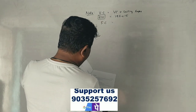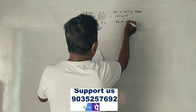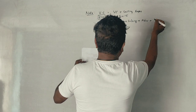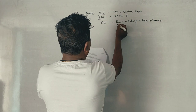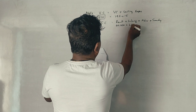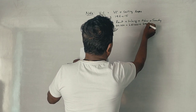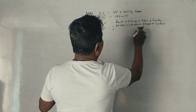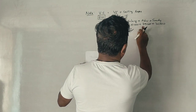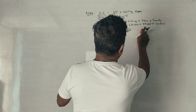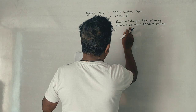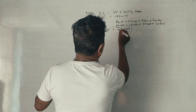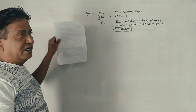Fixed cost includes rent, salary, and advertisement. The total fixed cost comes to 4,50,000 rupees. So we have both variable cost and fixed cost identified.